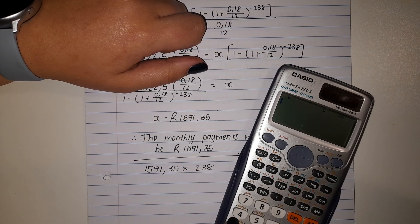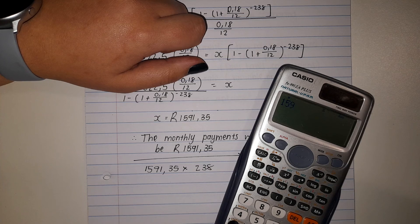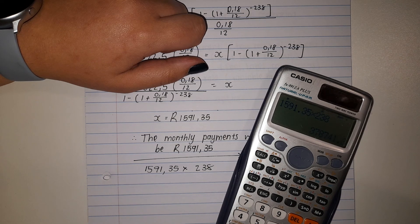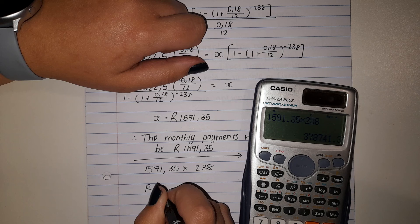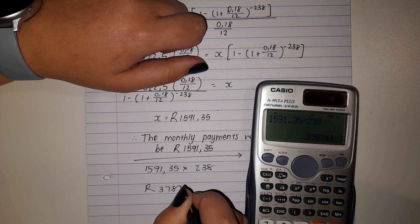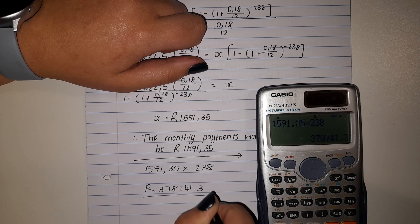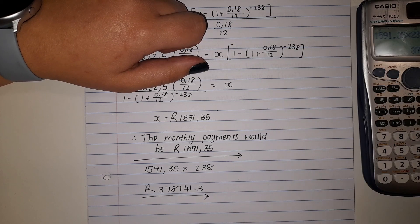If I put that in my calculator, 1591.35 times 238, we would see well at the end she needs to pay back way more than what she initially got the loan for.